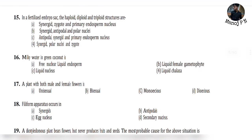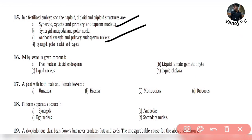Question 14: In a fertilized embryo sac, the ploidy conditions are — synergid is haploid, zygote is diploid, and primary endosperm nucleus is triploid. So the answer is option D.